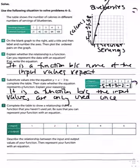Number seven, complete the table to show a relationship that is a function that you haven't used yet. Be sure that you can represent your function with an equation. So if you look, each of the input values is only used once.